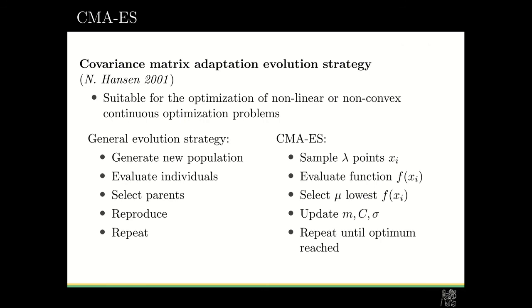And now we would like to talk about covariance matrix adaptation evolution strategy. It was proposed by Nico Hansen and it's an algorithm suitable for optimization of non-linear and non-convex continuous optimization problems.